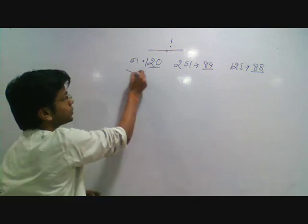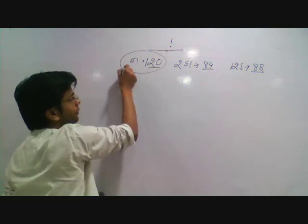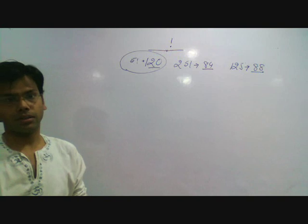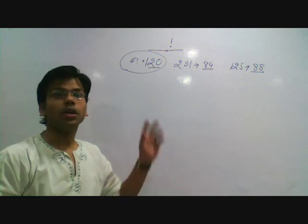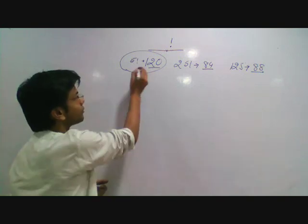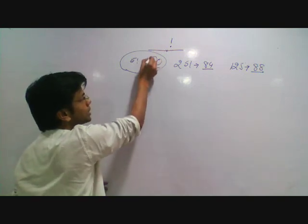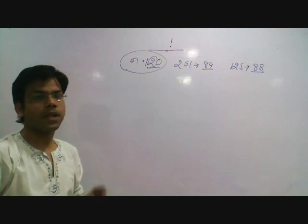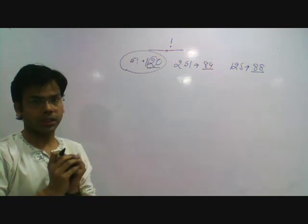I am just using only 5 factorial for this one. I know the last non-zero digit of 5 factorial is 2. I am going to use this.